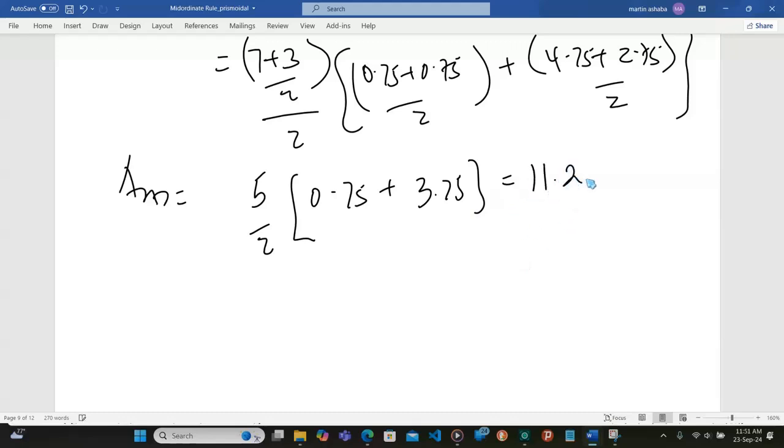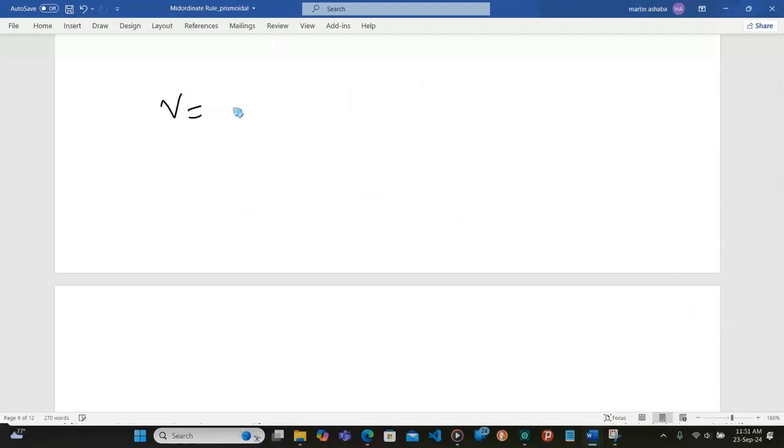Therefore, to get the volume, the volume will equal L, which is 17 out of 6, because the length along here is 17 meters. Area A1, we had 19.25. Then area A2, the last area, was 5.25.